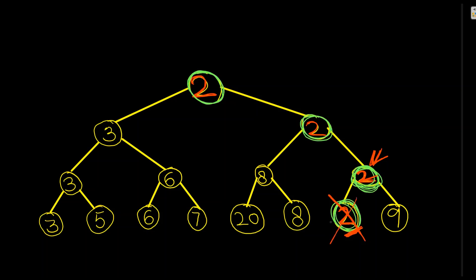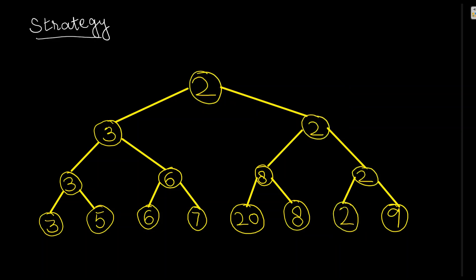The decision was made that two is the winner between two and nine. So I'll remove two - now only nine remains at that position, so nine gets updated. Then we have eight and nine: eight is the winner. Then between three and eight, three is the smallest, so three will be the winner - that is the second minimum we need to find.